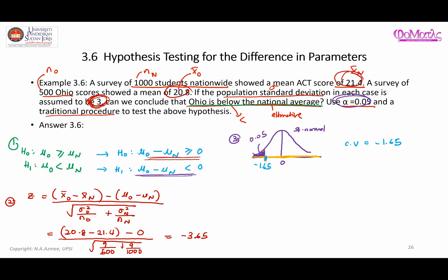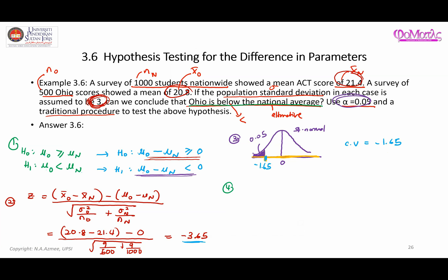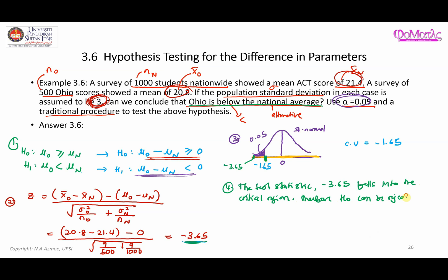The critical value is negative 1.65. The fourth step is to decide the fate of the null hypothesis. Since the test statistic is negative 3.65, it falls to the left of negative 1.65 — clearly inside the critical region. Therefore, the null hypothesis H0 can be rejected.